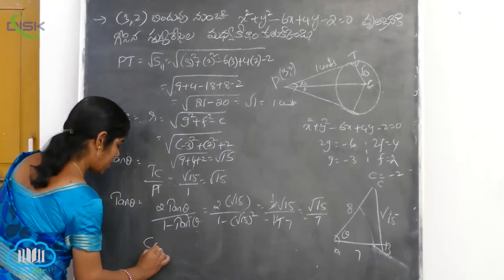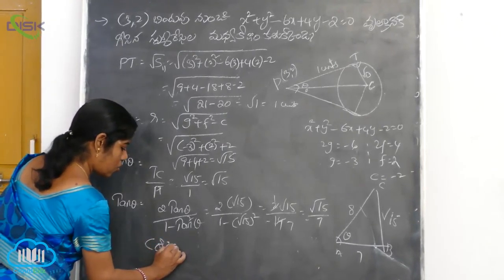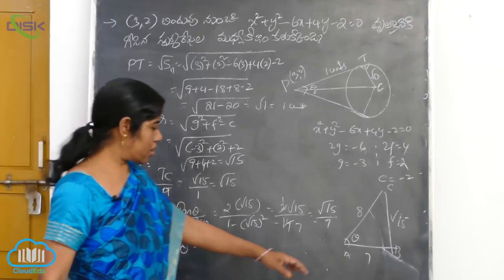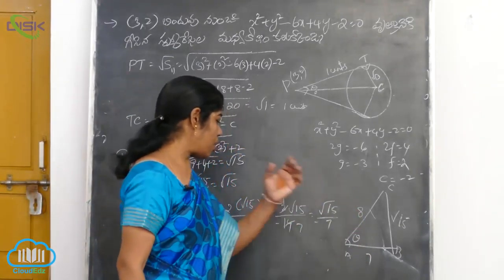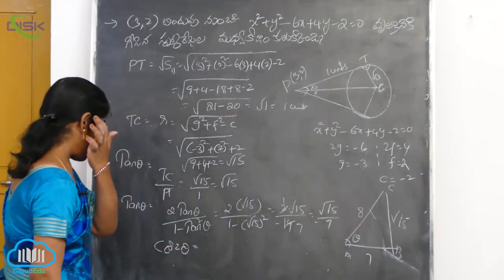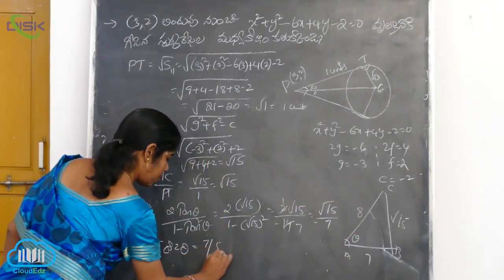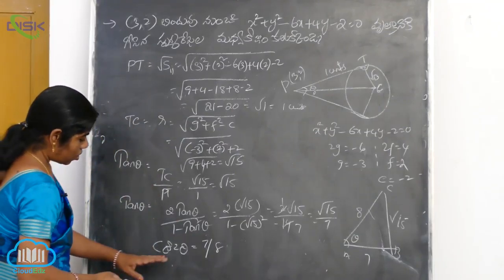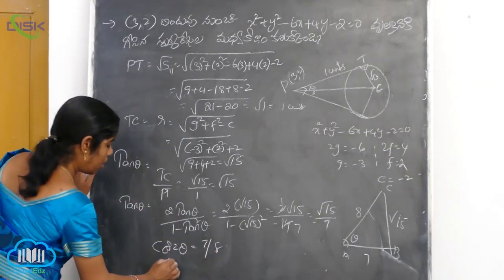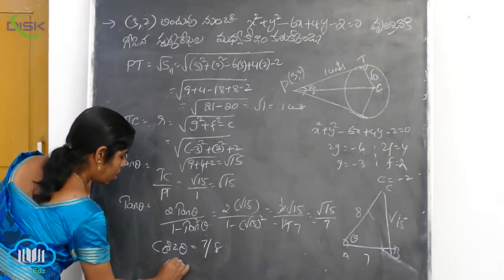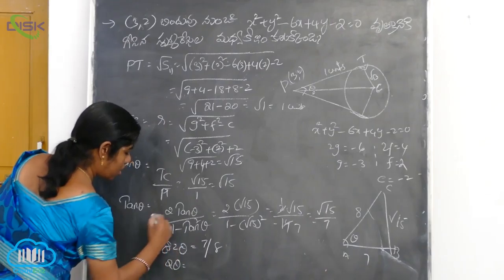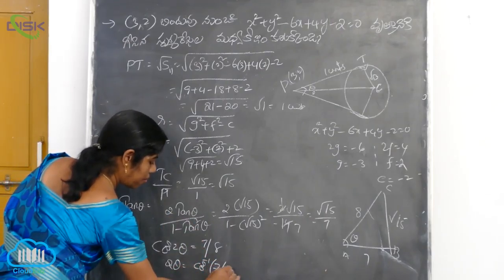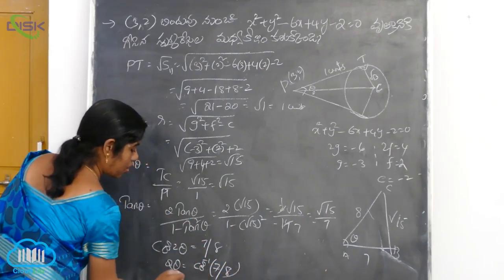We need cos 2theta. Cos 2theta: using adjacent side by hypotenuse gives 7 by 8. So cos 2theta is equal to 7 by 8. Applying cos inverse, 2theta equals cos inverse of 7 by 8.